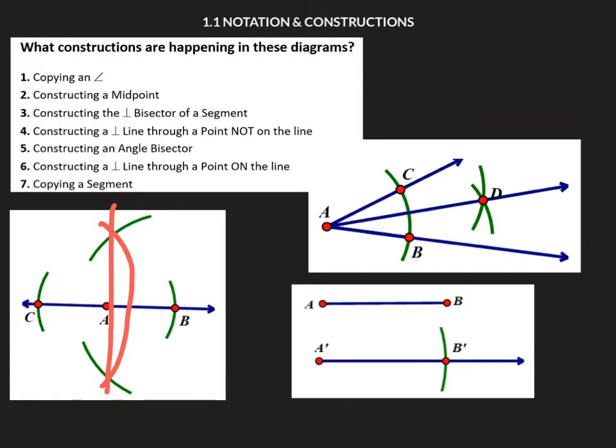So the answer is it's the perpendicular when our point was on the line and the giveaway to it was that this has a curved arc here and here based out of basically A as the center of that circular pattern.